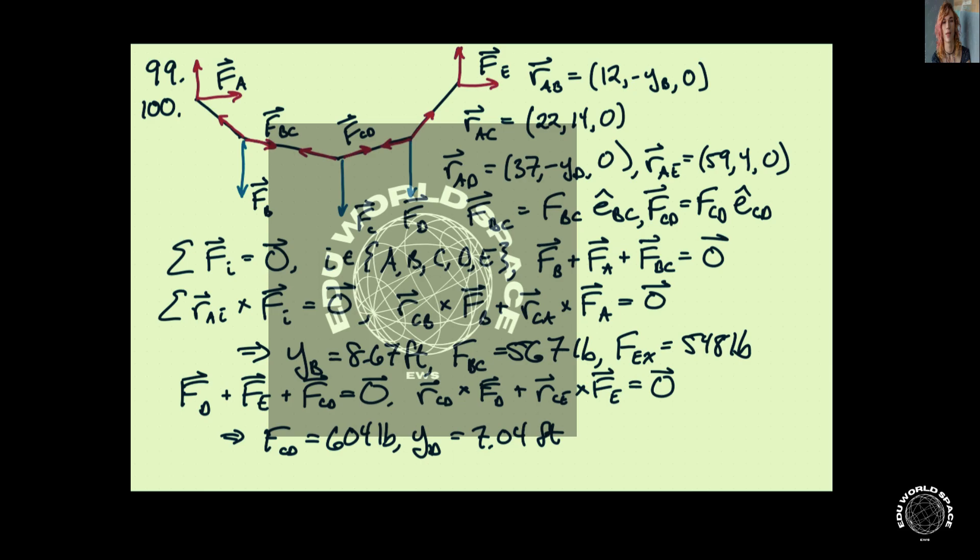Now for problem 100, we actually have the exact same analysis, but we'll just have different unknowns in this case. For problem 100, we have that YB is 8 feet.